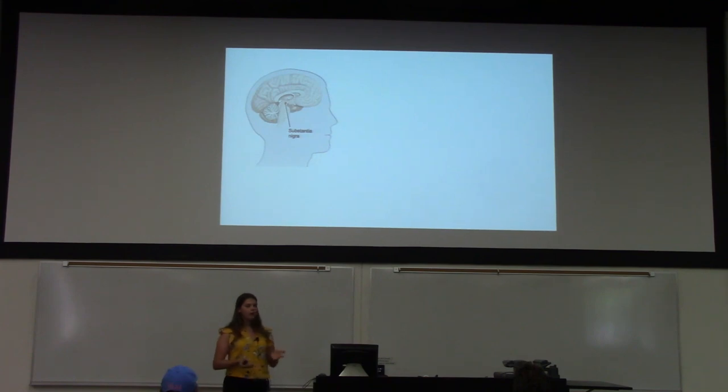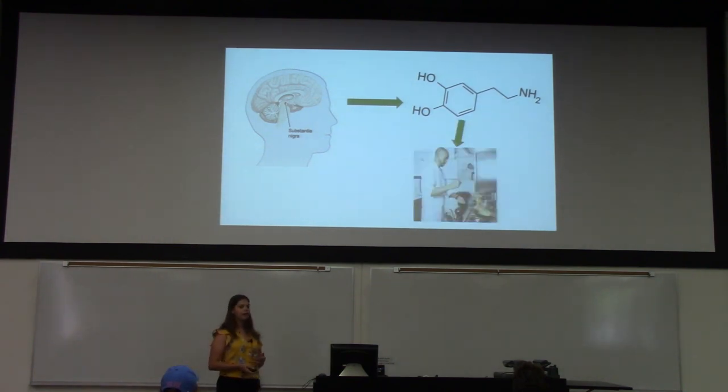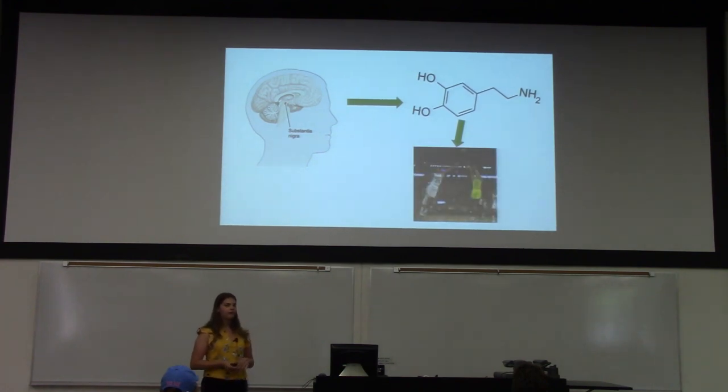So there's this one part in our brain called the substantia nigra, and it's responsible for making and creating dopamine. And dopamine is super important for our everyday movements, such as walking, cooking, and playing sports. Everything from simple to complex, it's just regulating and maintaining it for a smooth transition from one thing to another.